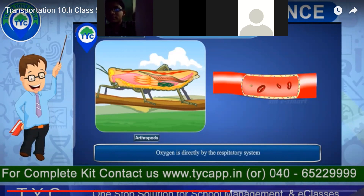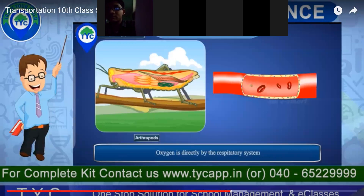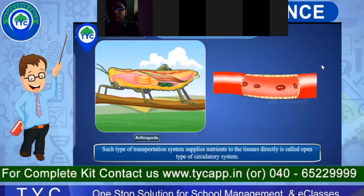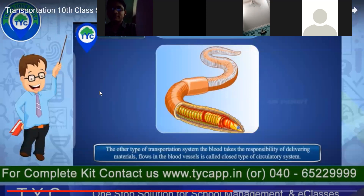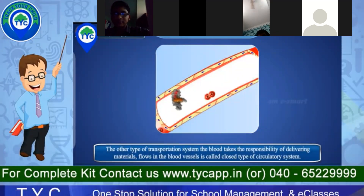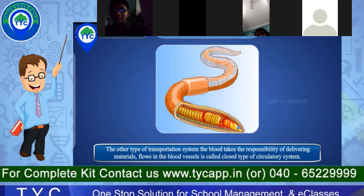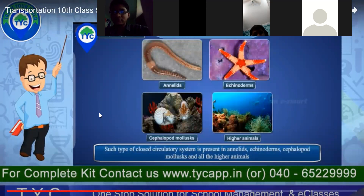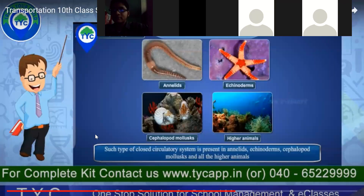A group of cells performing the same function forms a tissue, and a group of tissues forms an organ. That is how oxygen is directed by the respiratory system. The blood takes responsibility for delivering materials that flow in the blood vessels — this is called a closed type of circulatory system. Closed circulatory systems are found in annelids, echinoderms, cephalopods, molluscs, and higher animals.